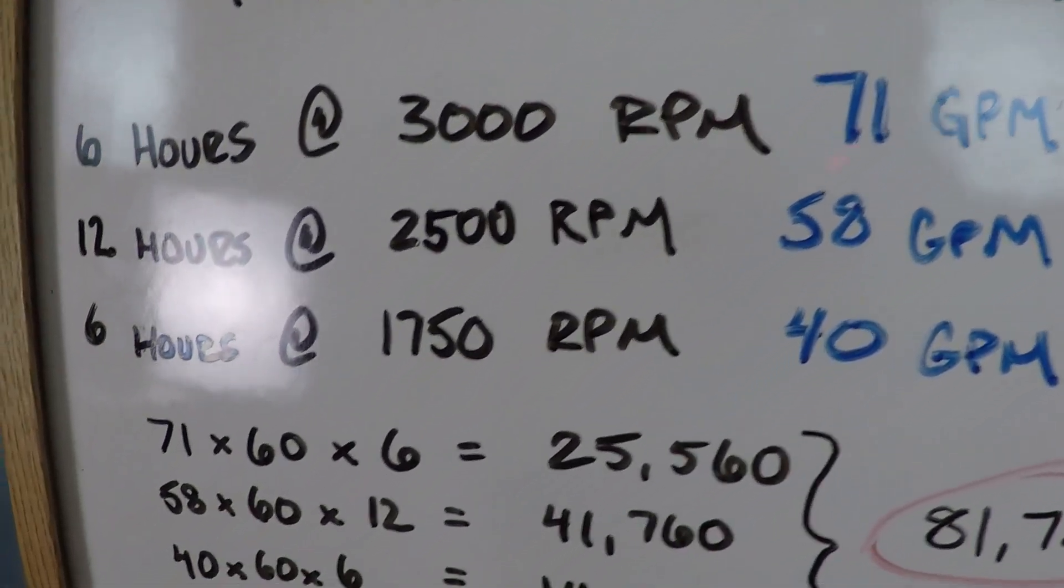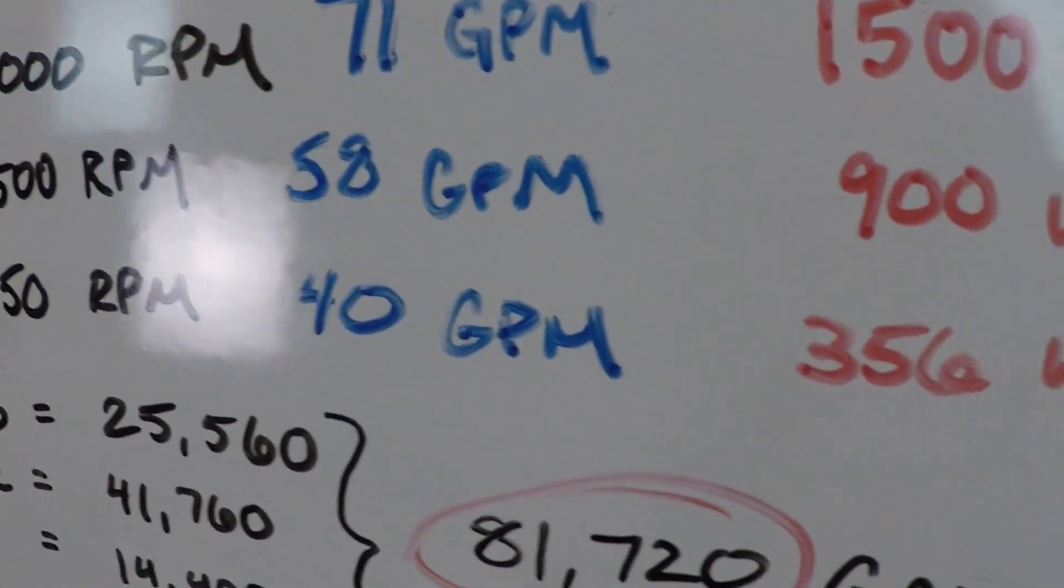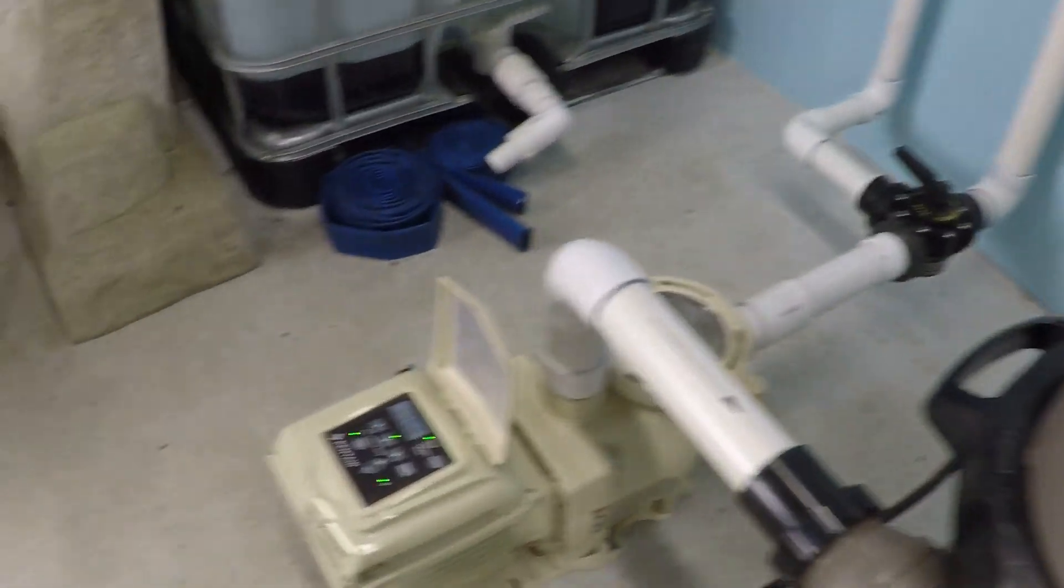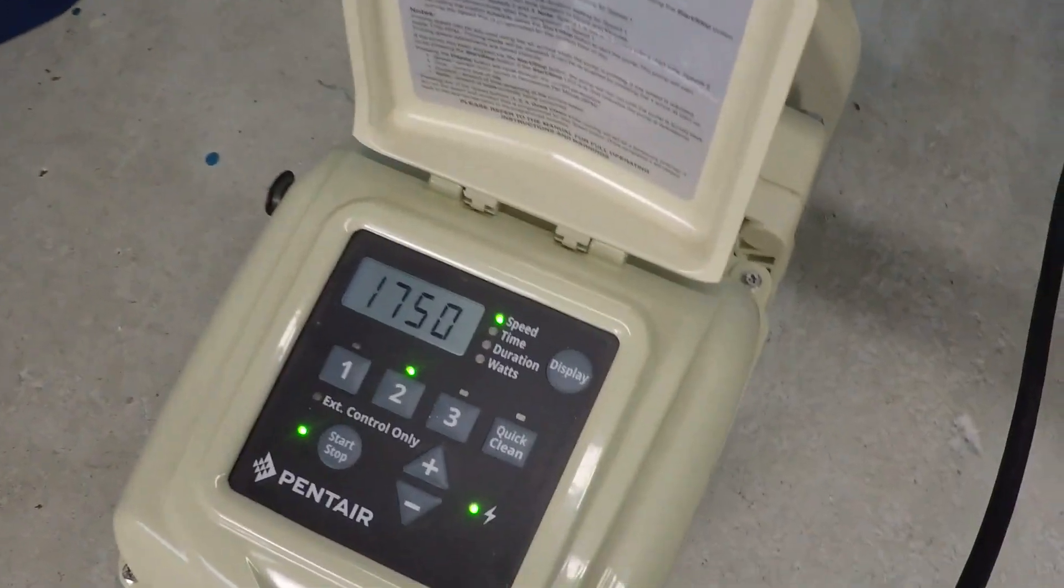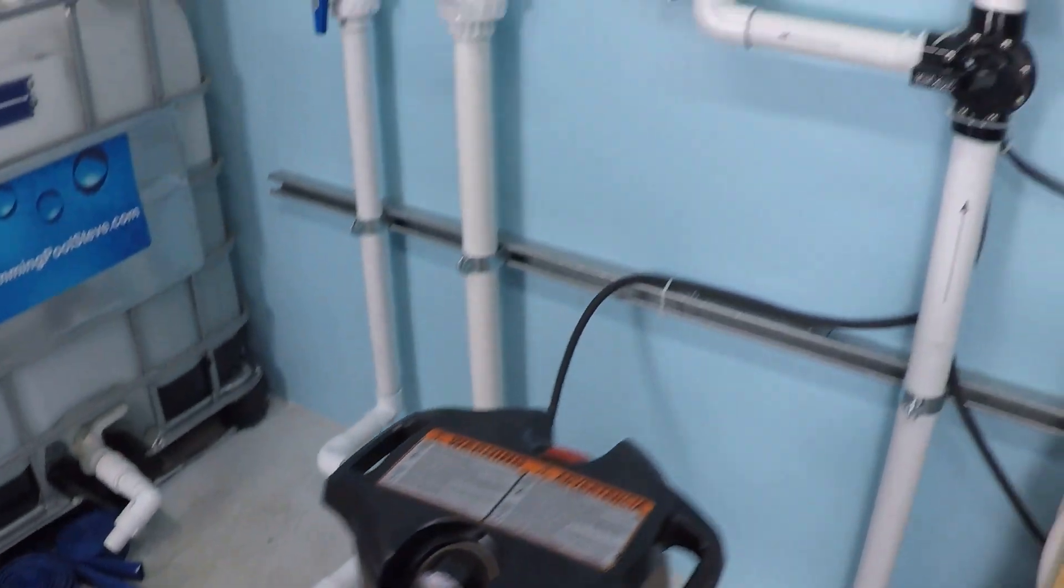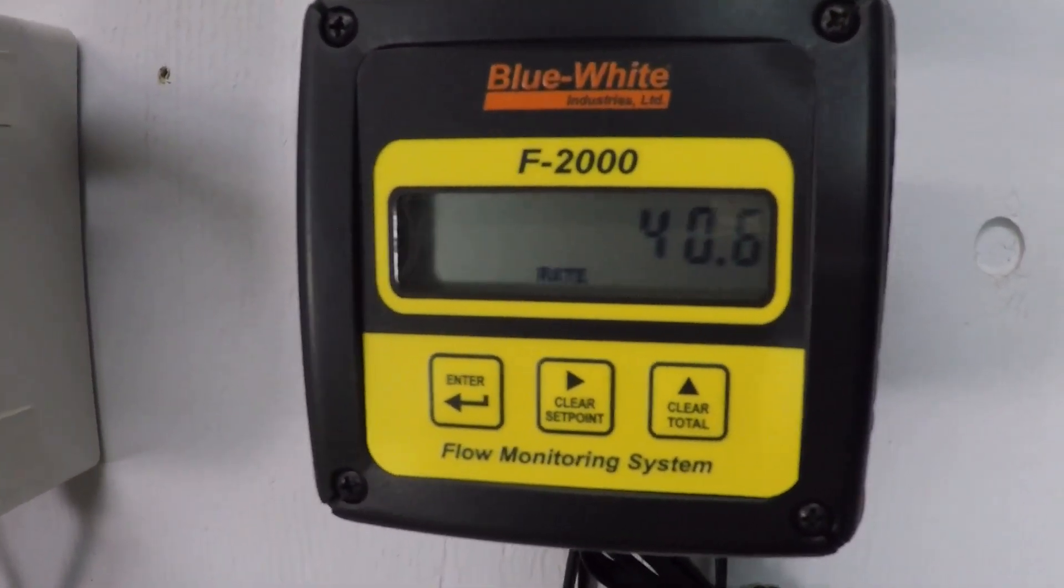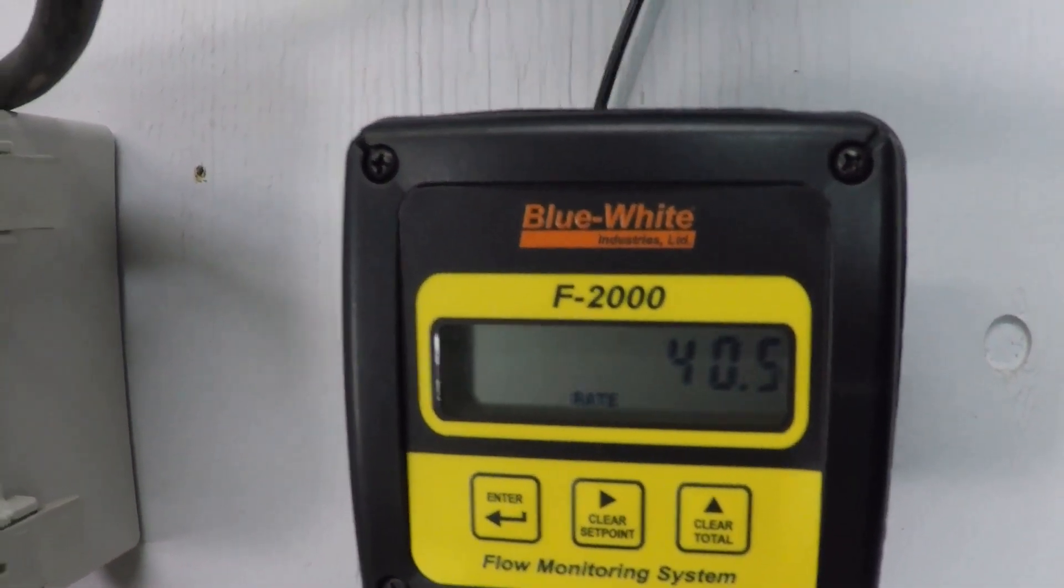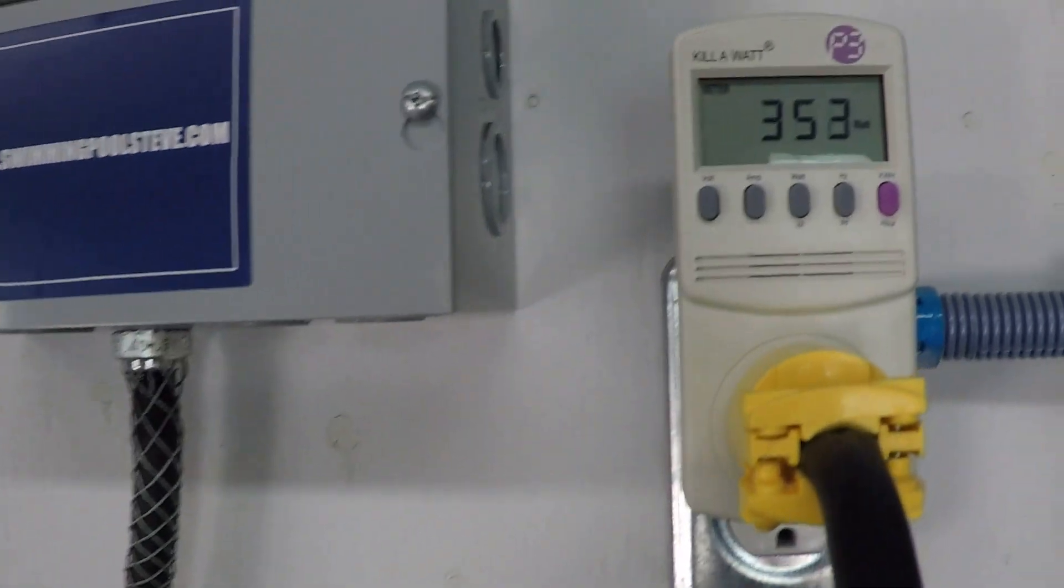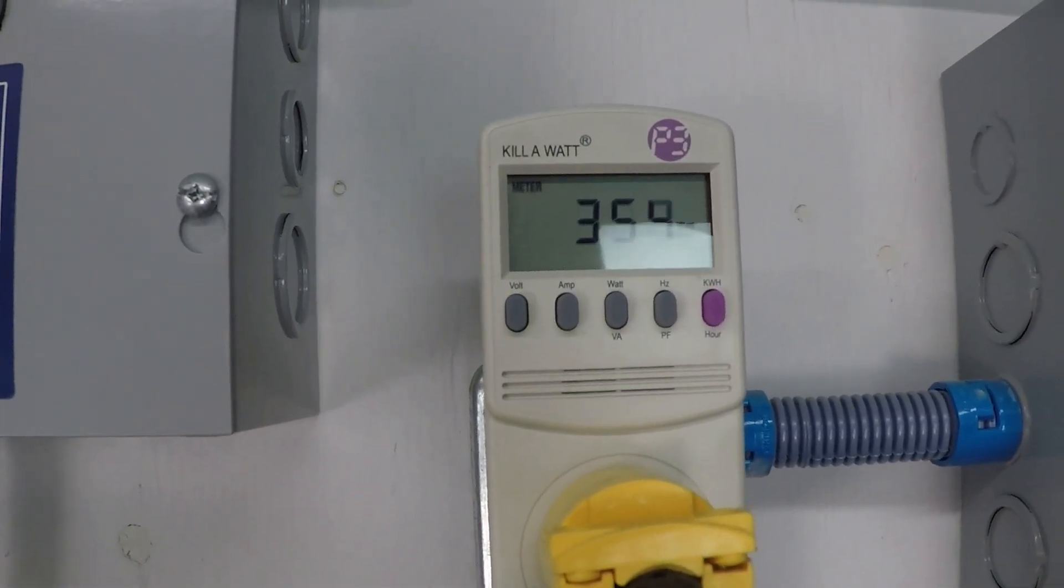Let's run through those numbers right now. We'll start here on the bottom because the pump's already at 1750. So we should see 40 gallons per minute and 356 watts. Just a shade over 40 gallons per minute and right about 356 watts as expected.